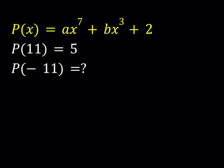Hello everyone. In this video we're going to be looking at a problem on polynomials. We have P of X equals AX to the 7th power plus BX to the 3rd power plus 2. So P of X is a polynomial. A and B are real coefficients and we are also given that P of 11 is equal to 5. And we are supposed to find P of negative 11.